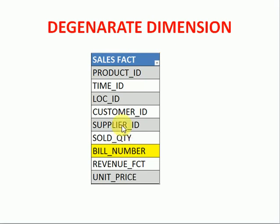Why? Because if you have an order fact table with order number and order line number, I do not want to maintain this data in a separate dimension table, so I will maintain it in the fact table itself. Here also you can see bill number — bill number is master data actually, but I am maintaining it in the fact table itself. So this type of fact will act as a Degenerate Dimension.